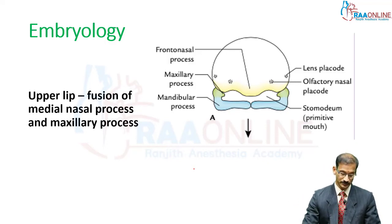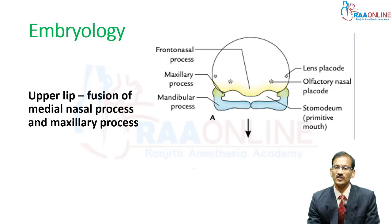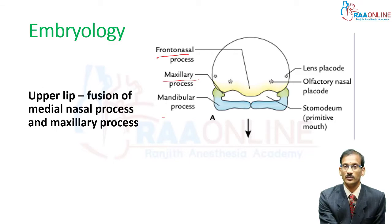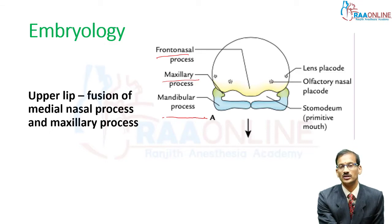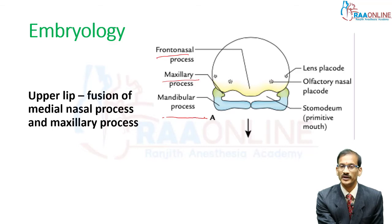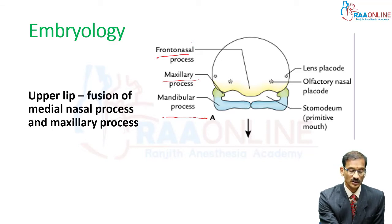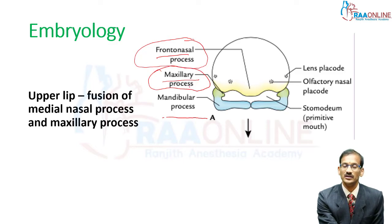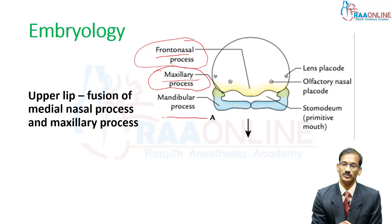Looking at this picture, the face develops from three processes: the frontal nasal process, the maxillary process, and the mandibular process. The upper lip is a common site for cleft lip. It is formed by fusion of the median nasal process of the frontal nasal process and the maxillary process. Whenever there is a defect in the fusion of these two, you get an upper lip cleft.